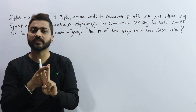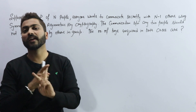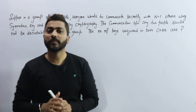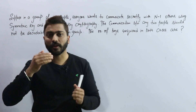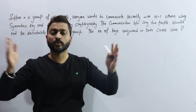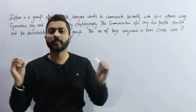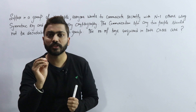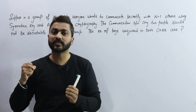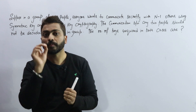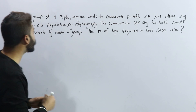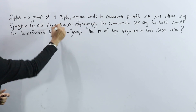I want to tell you that in cryptography we use two approaches: symmetric and asymmetric key. In network security, we use cryptography to achieve confidentiality, and we achieve it in two ways — symmetric and asymmetric.